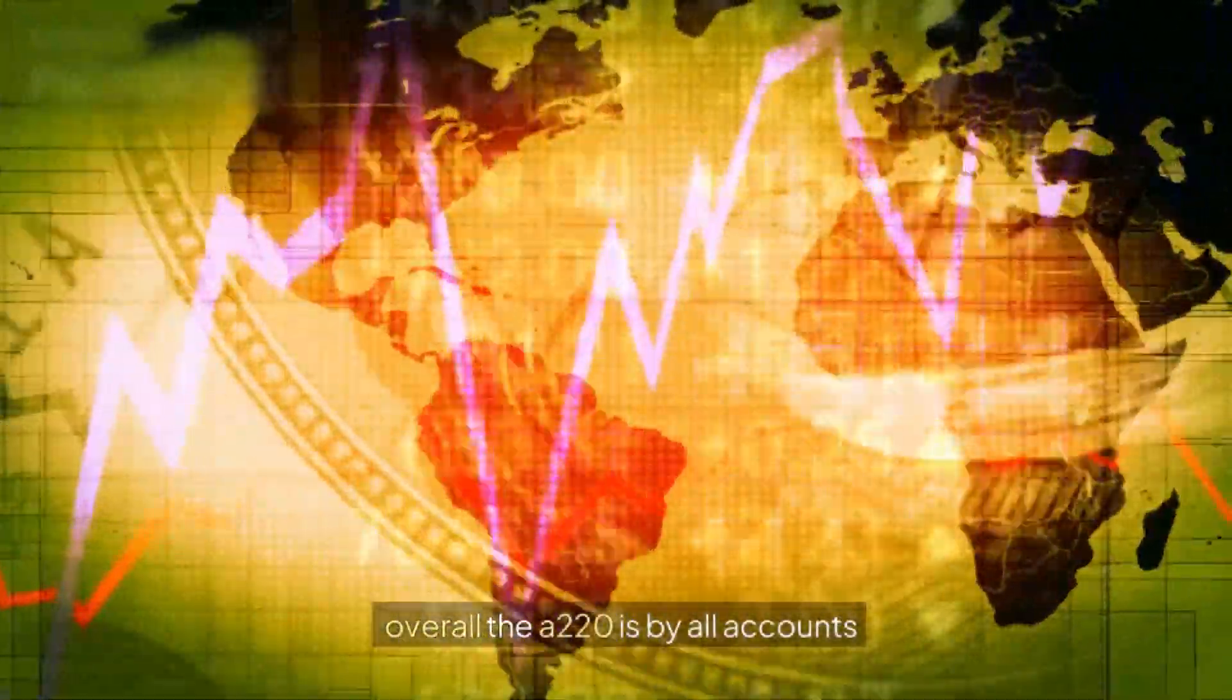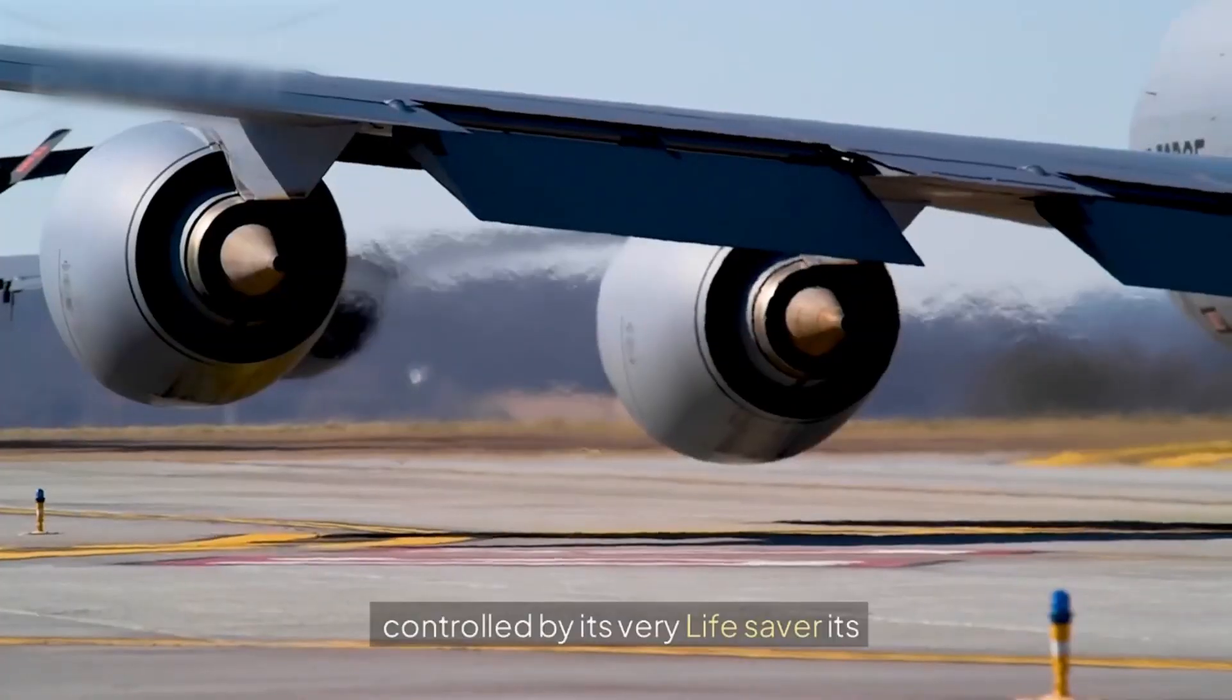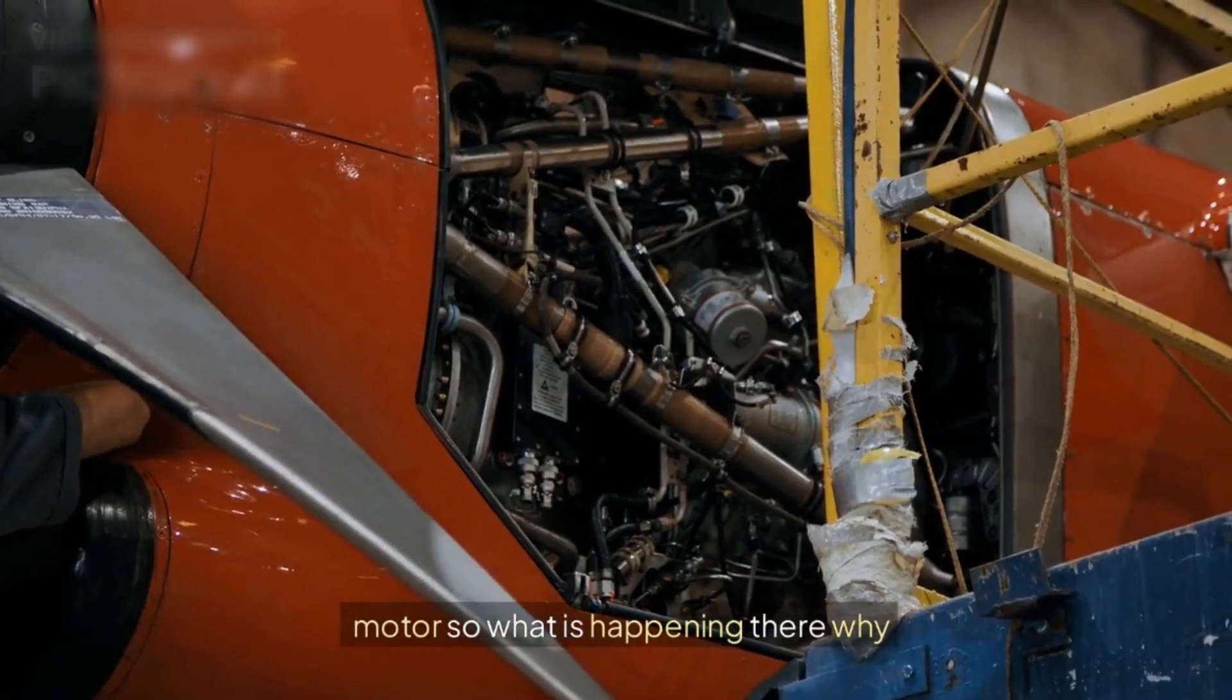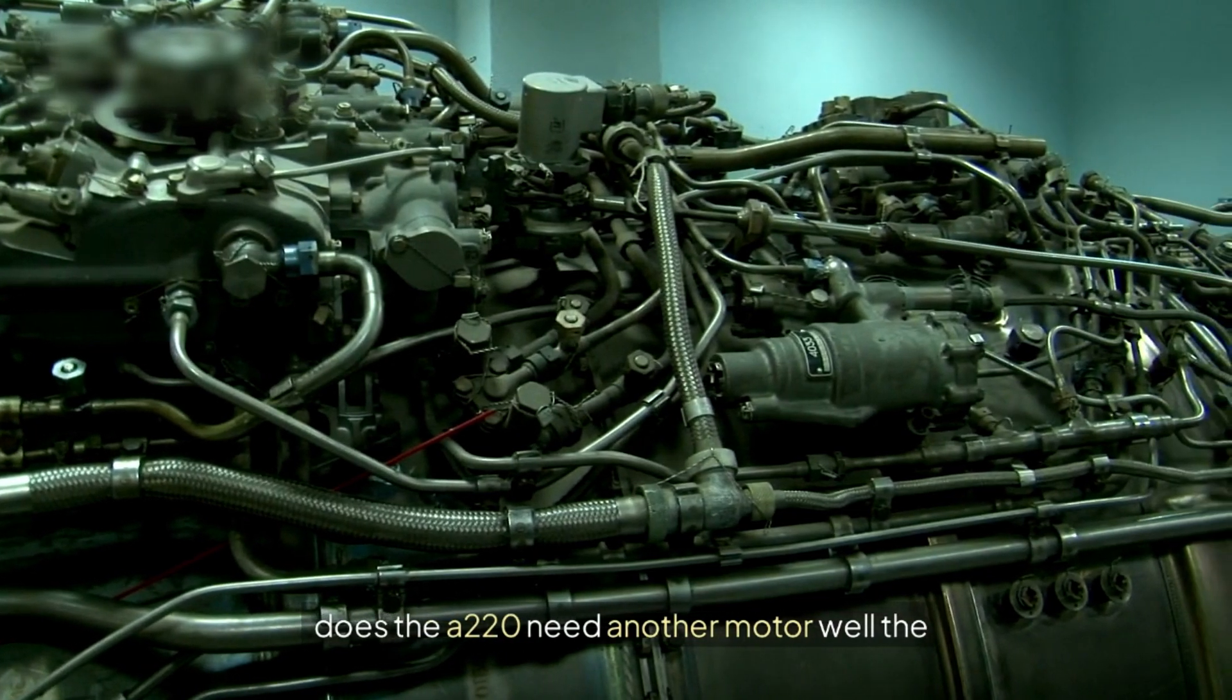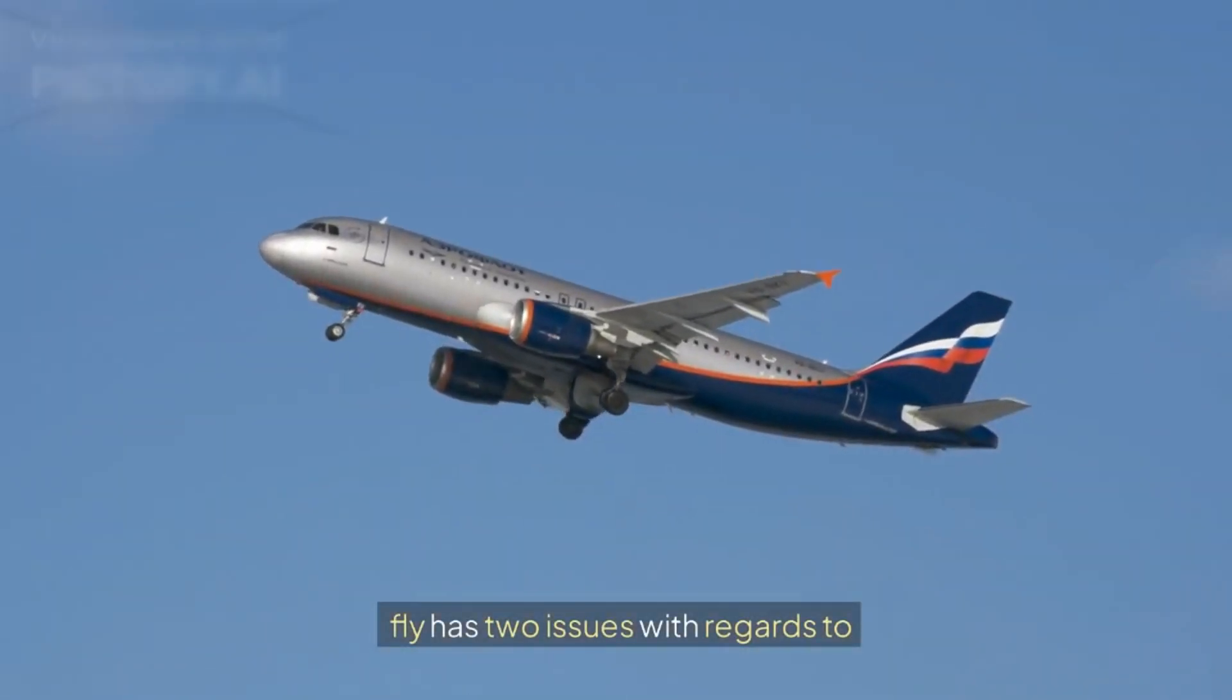Anyway, in spite of these enormous orders overall, the A220 is by all accounts controlled by its very lifesaver, its motor. So what is happening there? Why does the A220 need another motor? Well, the jet has two issues with regards to its motor.